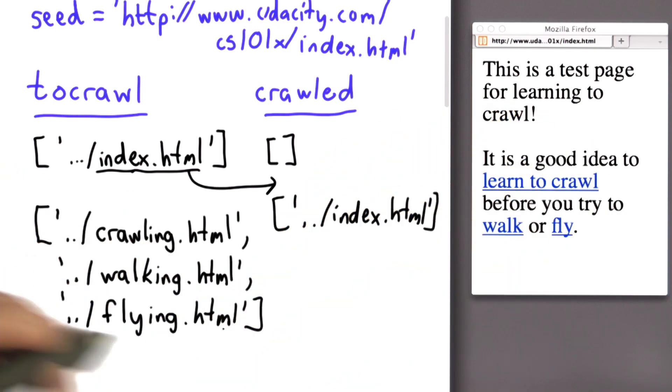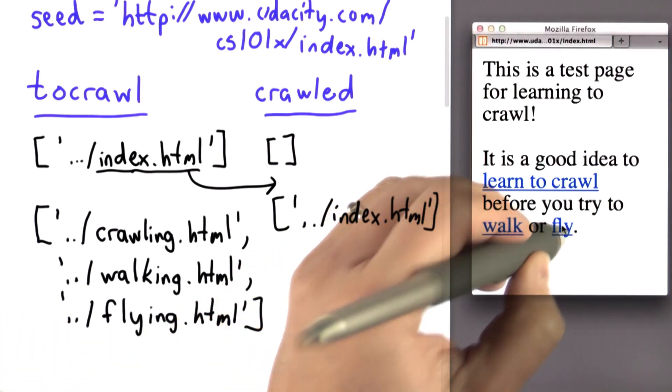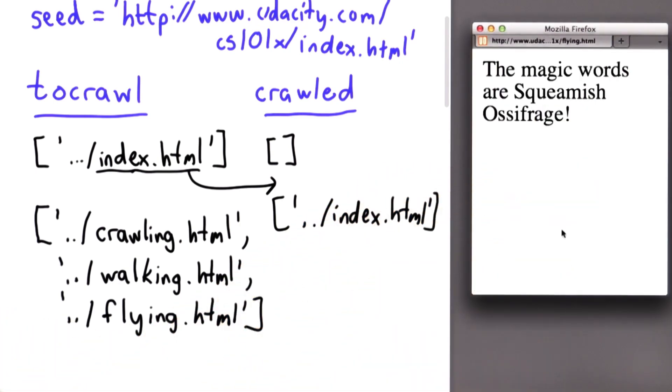The next thing we want to do is take one of those links and crawl it. The order actually matters a lot in terms of getting a good crawl. Let's assume for now that we'll just do the last one first. So we'll do the link that links to the flying page. Here's the page there.